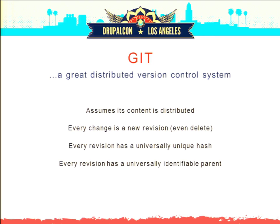Starting with version control systems — we all know Git. Git assumes that your content is distributed, that content can come from everywhere. Every change in Git is a new revision, even when you delete a file, that's a new revision, because you don't lose files with Git. Every revision has a universally unique hash so we can identify it across systems. And every revision has a parent — it's not just coincidence that revisions appear after each other in a table. They actually have a parent.